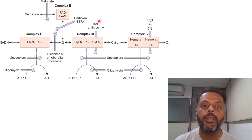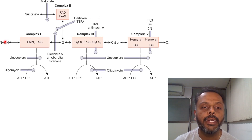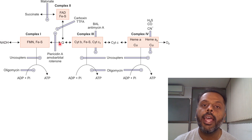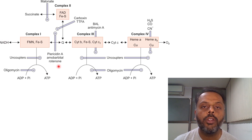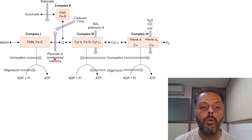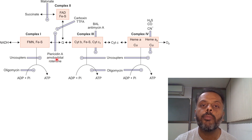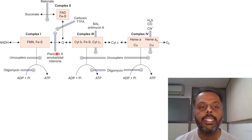Inhibitors of complex 1 — from NADH to coenzyme Q — are rotenone, which is a fish poison and insecticide, amobarbital, which is an example of a barbiturate, and piericidin A.